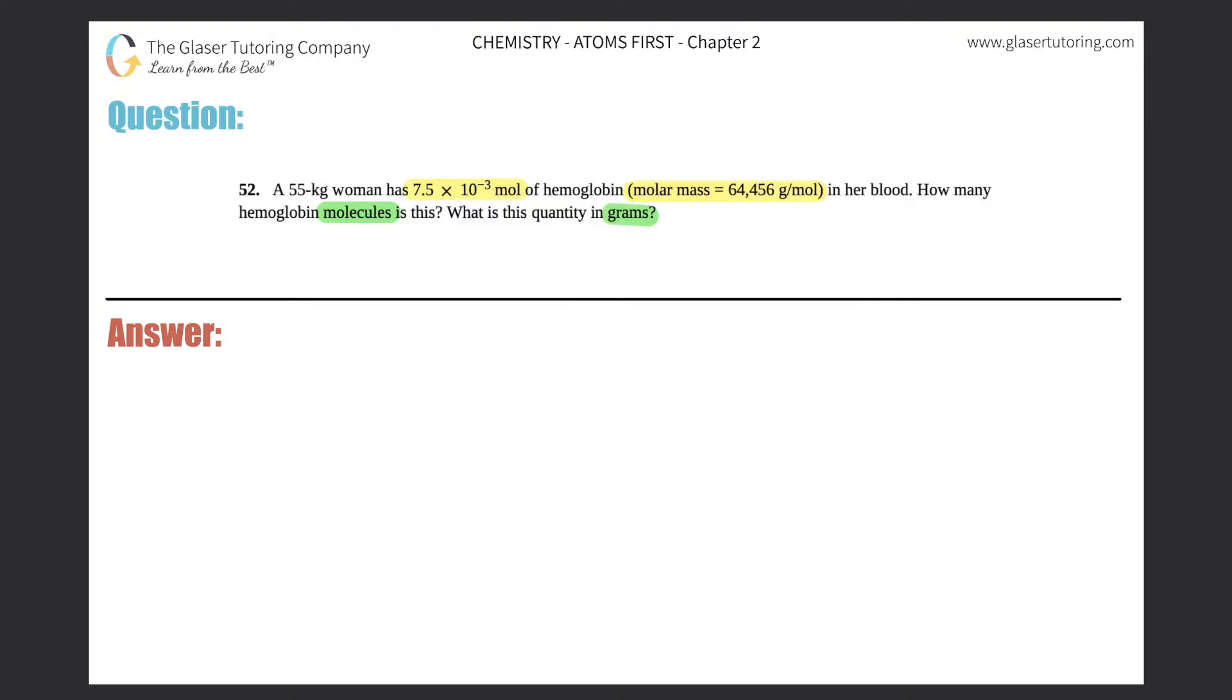Alright, so it looks like we have two questions here. They want us to go from 7.5 times 10 to the negative 3 moles of hemoglobin. I'm just going to put HB for hemoglobin, and they want us to find out how many molecules of hemoglobin this is. So that would be the first question.